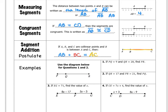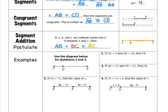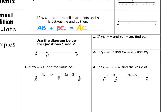We're going to apply that now to some examples. In examples one and two, we're using the diagram of line segment PR with point Q in between. Number one says: if PQ equals 9 and QR equals 28, find the length of the entire segment. To do that, I would just take 9 plus 28, add those together, and I get 37.